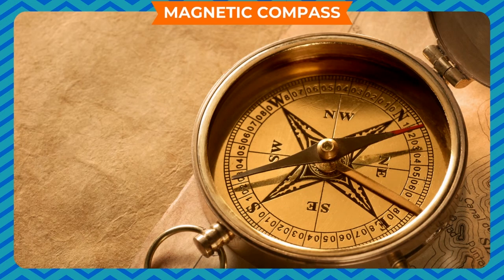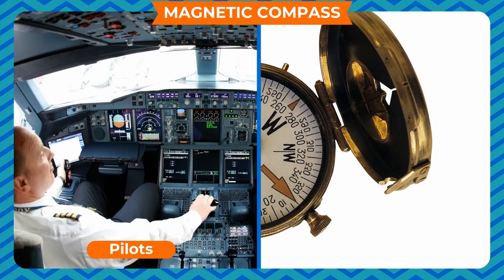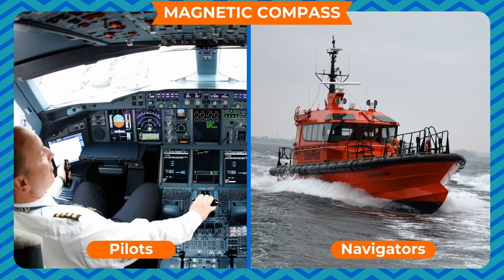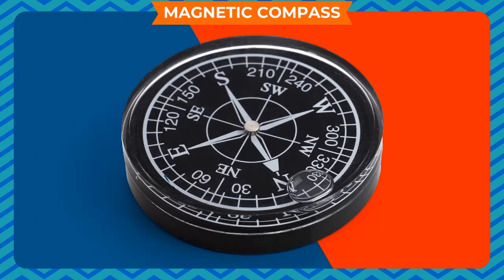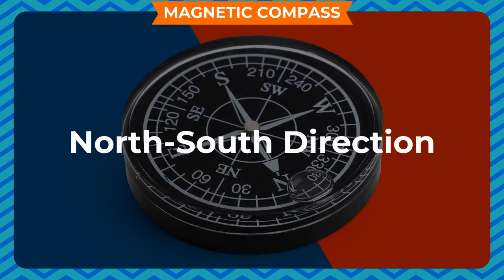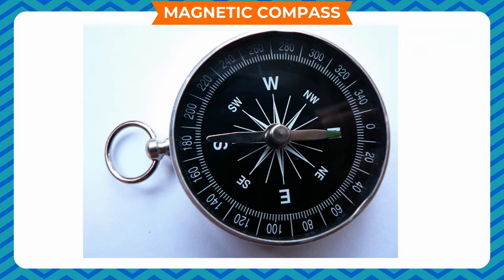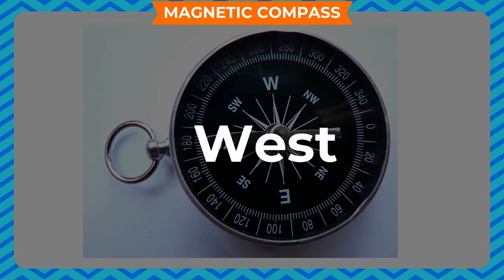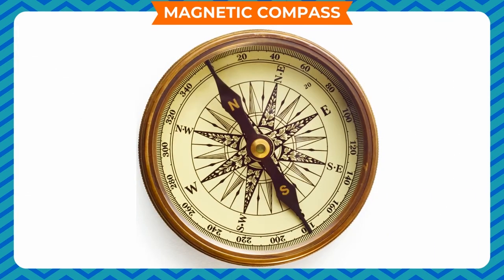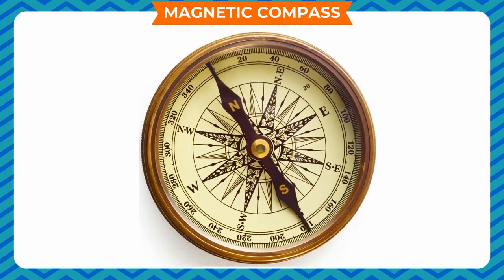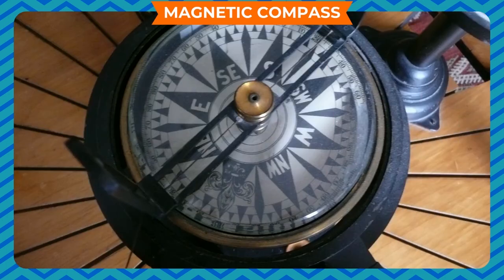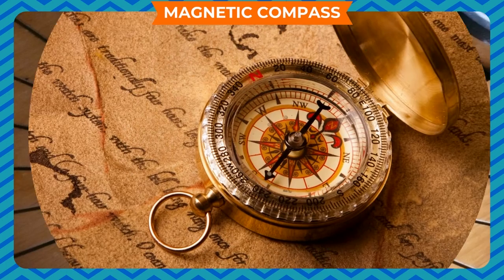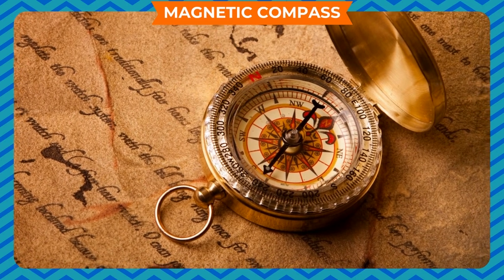A magnetic compass is a simple device used by pilots and navigators to find the direction in which their ship or aeroplane is moving. It is based on the direction-giving property of a magnet, i.e., a freely suspended magnet rests in the north-south direction. It consists of a flat circular aluminium box at the base with marked directions like north, south, east, west, north-east, north-west, etc. From its centre rises a sharp needle over which a magnetic needle is placed. The magnetic needle is completely free to move in any direction. A circular glass plate is fixed on the top of the box, and by looking at the north pole of the magnetic needle, we can find the given direction.